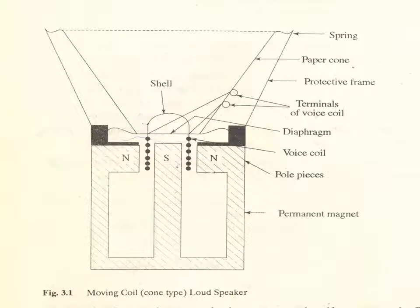Look at this diagram also for the moving coil loudspeaker — this shows the side view. The parts visible are: permanent magnet, pole pieces, voice coil, diaphragm, terminals of voice coil, protective frame, outer frame, paper cone, and spring shell. This diagram describes the parts of the loudspeaker in depth.